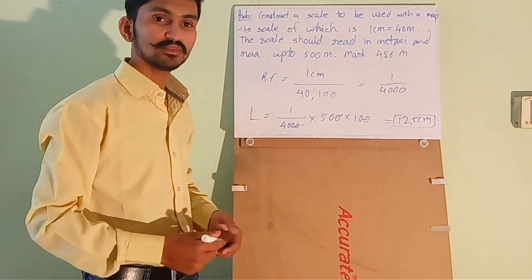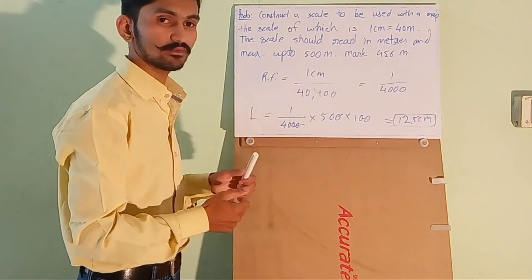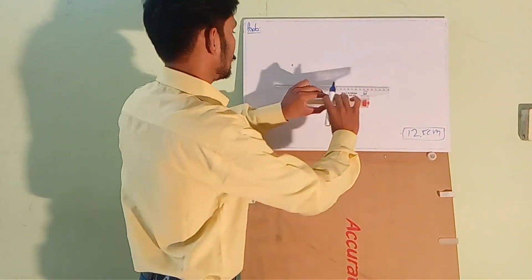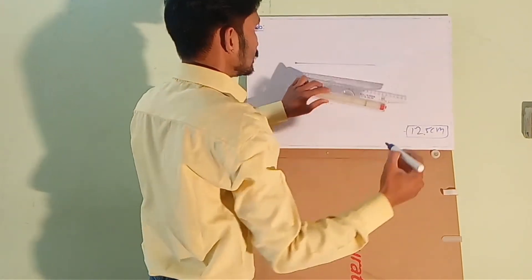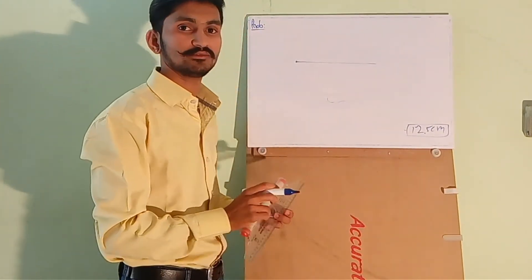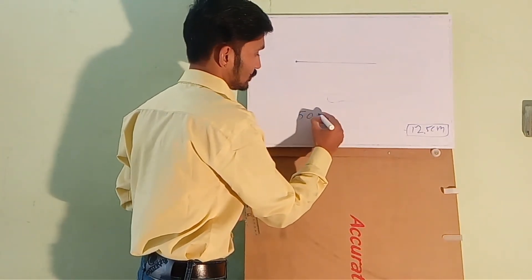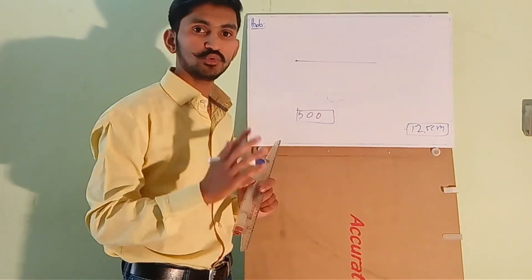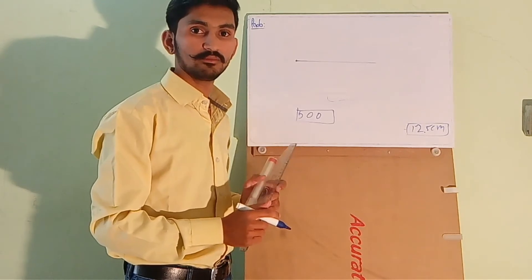Okay, so the length of the scale is 12.5. Again the procedure is same as we drawn in the previous question. But let me show you the procedure once again. Draw a line of 12.5 centimeter. I have drawn the line of 12.5 centimeter. Now we need to show maximum up to 500 meters. So we will be dividing this line into 5 equal parts. Each part will be showing 100 of meter.